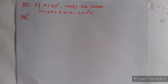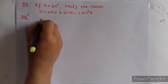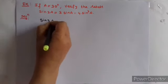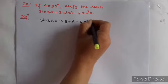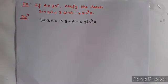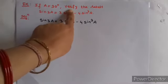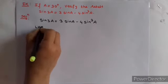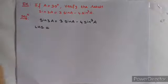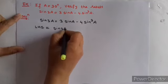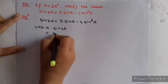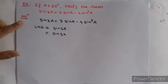So let us write the formula: sin 3a equals 3 sin a minus 4 sin cube a. Here, instead of theta, a is used. Dear students, first we take the left hand side, then the right hand side, and if both are equal, the result will be verified. Left hand side equals sin 3a.